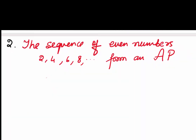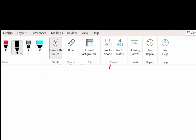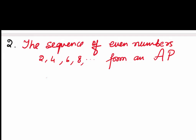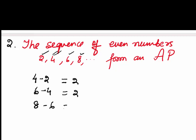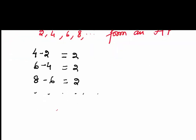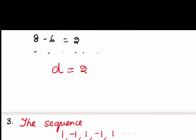For the second example, we are given the sequence of even numbers 2, 4, 6, 8, and we say it forms an arithmetic progression. The difference between the second and first term is 4 minus 2, which is 2. The difference between the third and second term is 6 minus 4, also 2. The difference between the fourth and third term is 8 minus 6, also 2. D is uniformly 2, hence it forms an arithmetic progression.